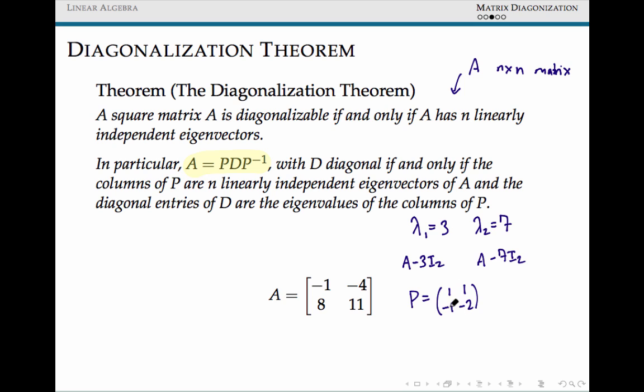Must be spanned by 1, negative 1, and our eigenvalue 2, our second eigenvalue 7, should correspond to eigenvector 1, negative 2.